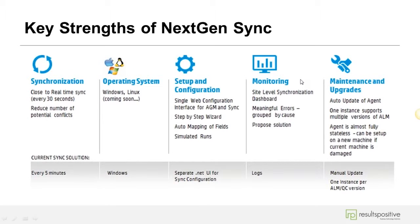The key strengths of this next-gen synchronizer between ALM and Agile Manager: synchronization is near real-time — every 30 seconds, which is close enough. It reduces the potential number of conflicts. You can install the integration bridge on any operating system — Windows or Linux. Setup and configuration is quick and easy with a step-by-step wizard, auto-mapping of fields, simulated runs, monitoring for conflicts, and simple maintenance and upgrades.